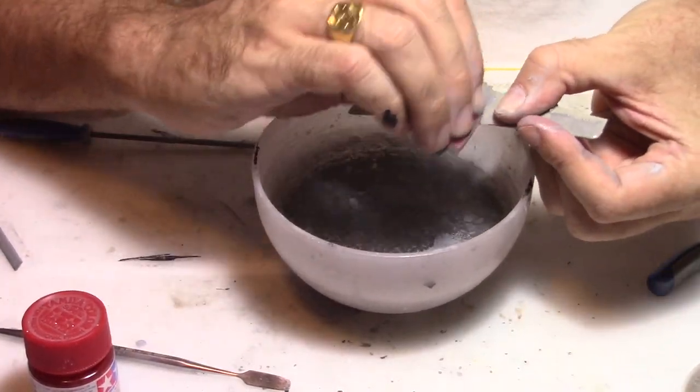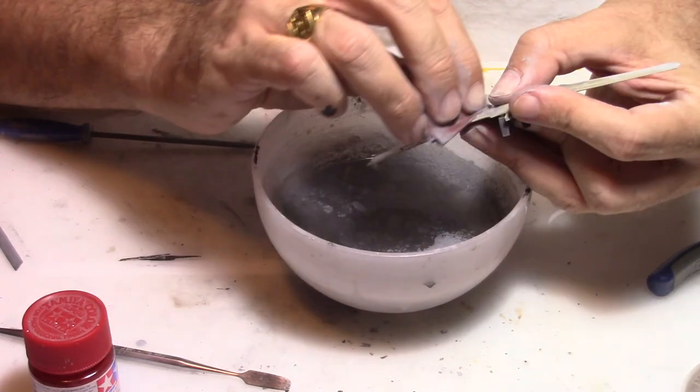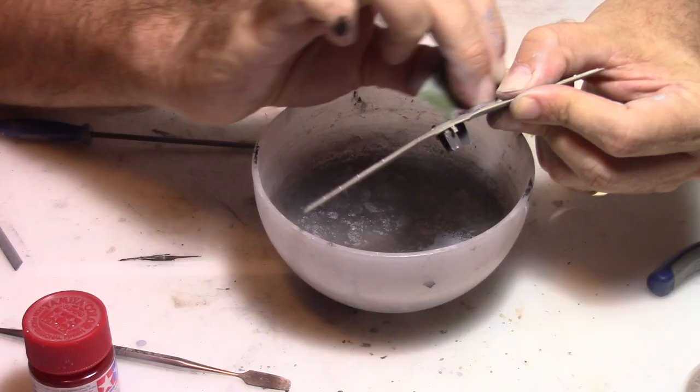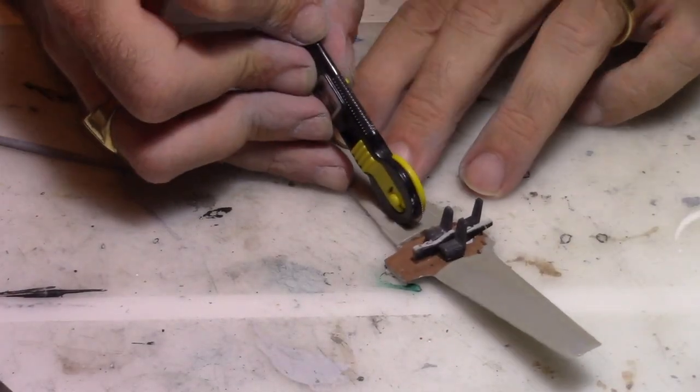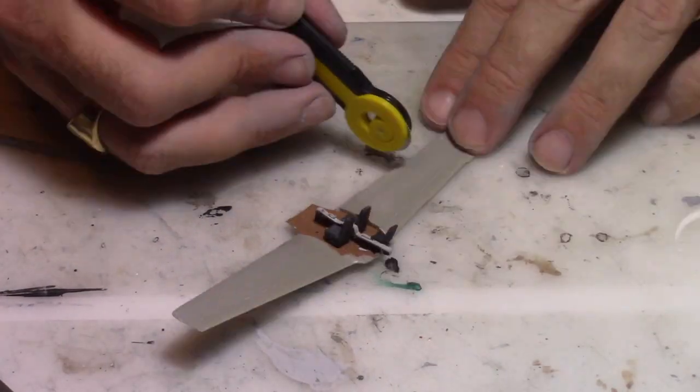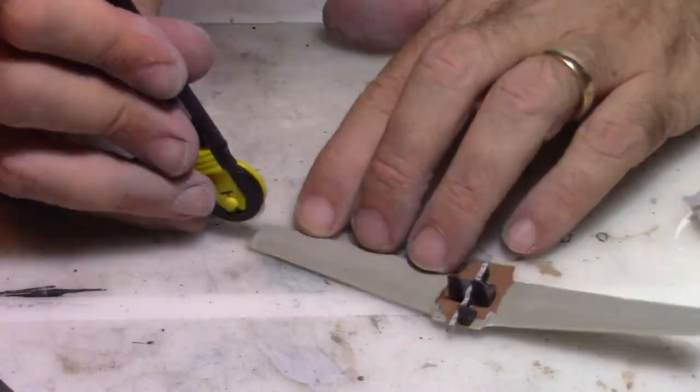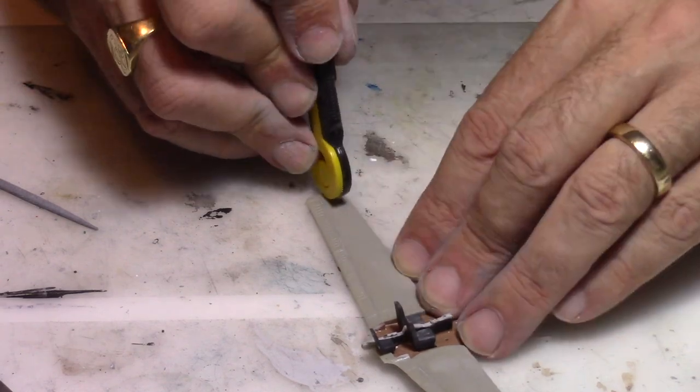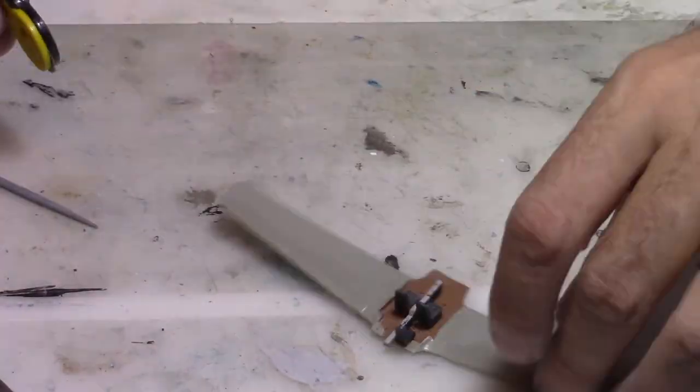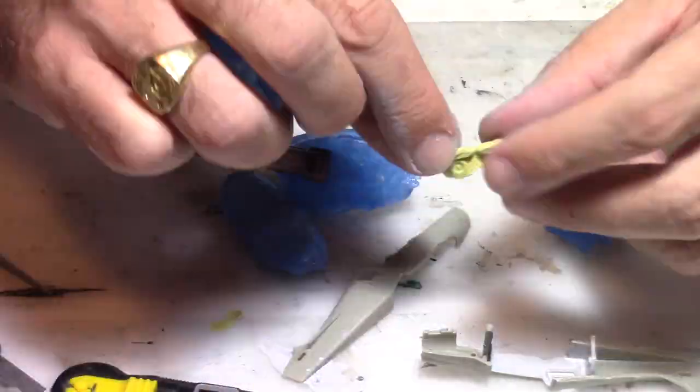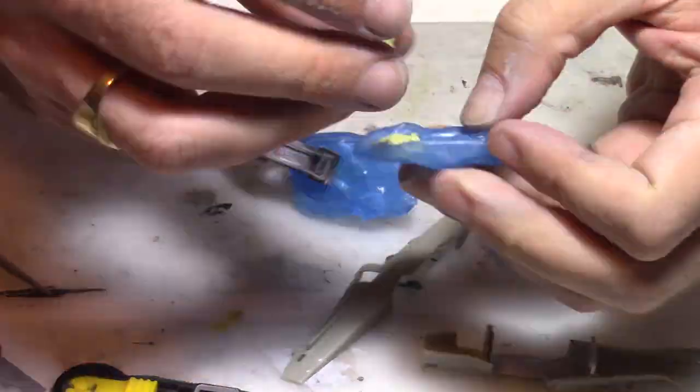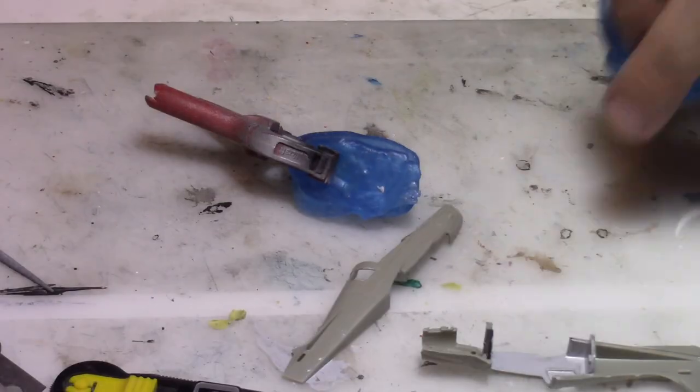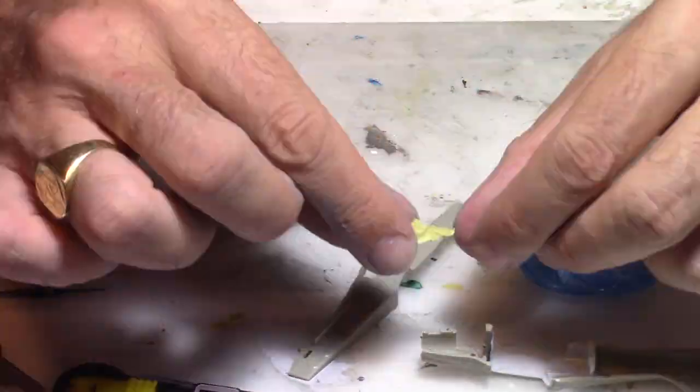After that came the long process of sanding down all that extra putty. Then I decided to rescribe the rivets on the wing. For this I used an extra tool called a rivet tool, which allows you to replicate rivets. You have different types of rivets for different scales. The one I bought is for 1:44, 1:72, and 1:48 scale.